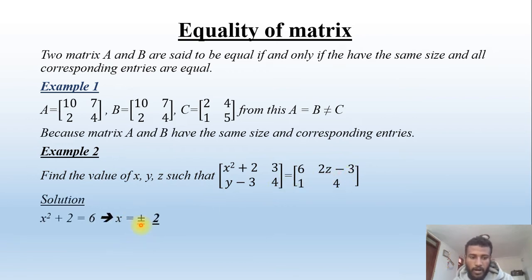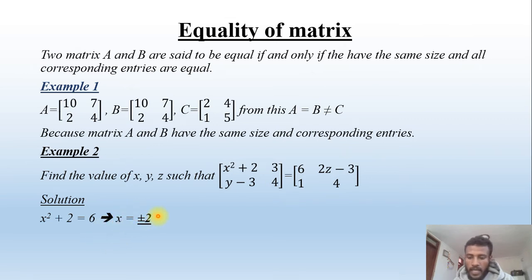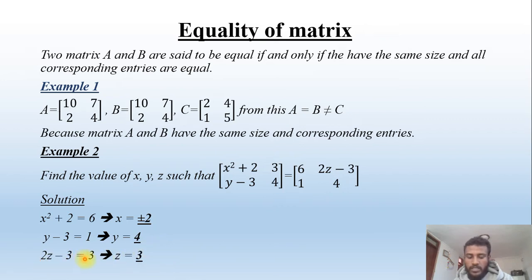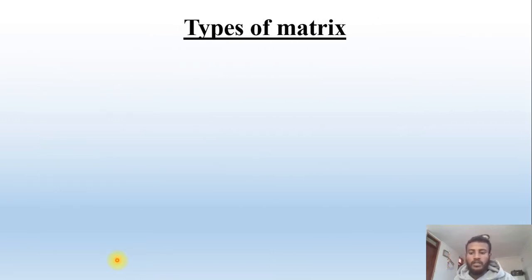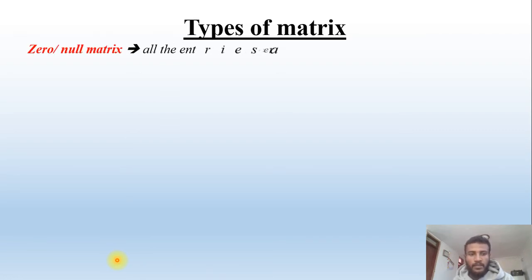For the solution: x² + 2 = 6, so x² = 4, giving x = ±2. From y − 3 = 1, the value of y is 4. From 2z − 3 = 3, z = 3. The next main topic is types of matrices, which can be divided into different types.